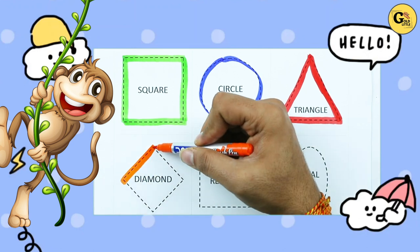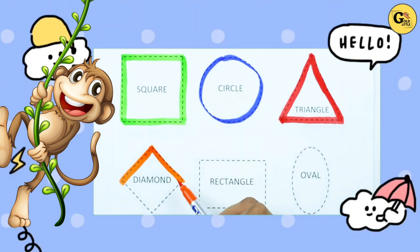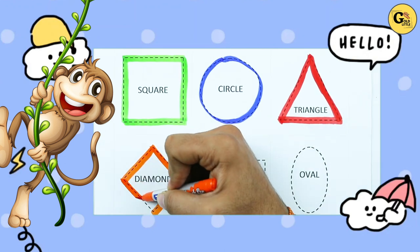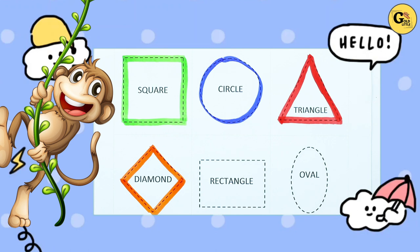One sliding line, two sliding line, three sliding line, four sliding line. It's a diamond, orange color diamond.